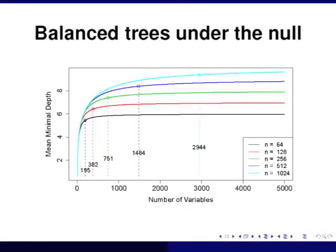We computed the point at which the mean minimal depth plus one half of the standard deviation would exceed the limiting depth value for a given tree. We found that this value was very closely related to p. For example, if you have 256 observations — meaning the tree thresholds at about 8 — it takes about 751 variables before you hit the saturation point. So it's something on the order of n, indicating you really can't do accurate variable selection once p gets too much larger than n.